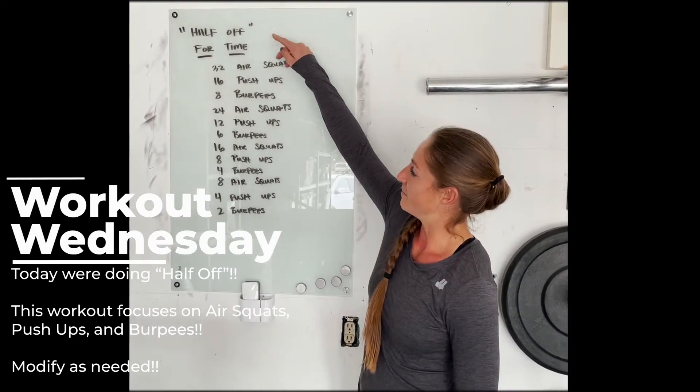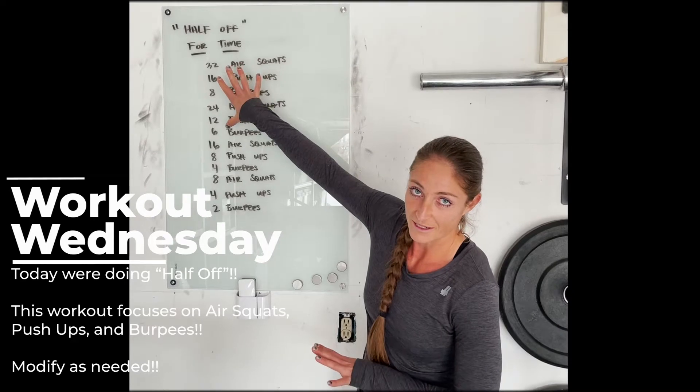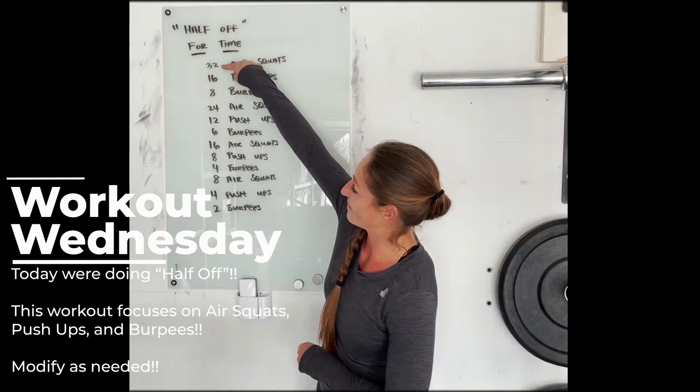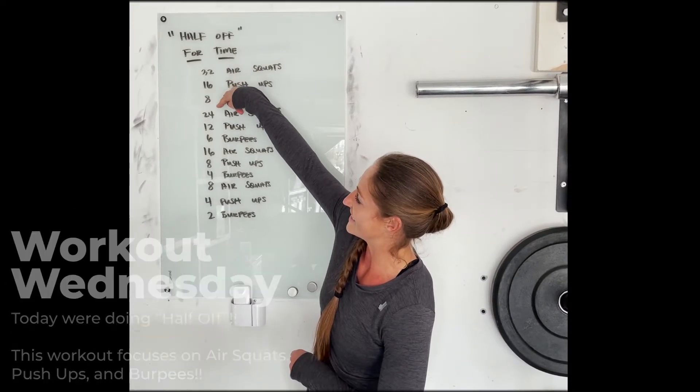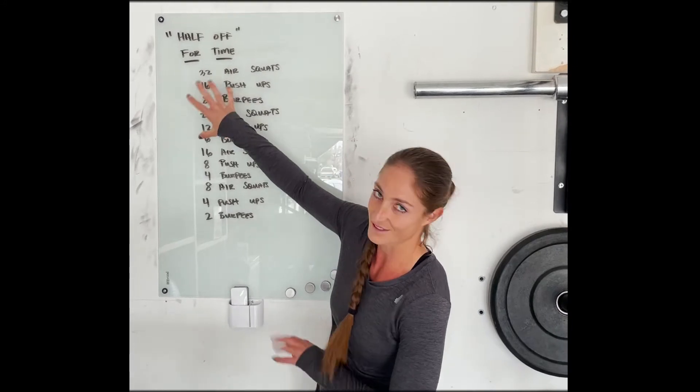You do it for time. If you didn't understand why we do the half off, you go 32, half of 32 is 16, half of 16 is 8, and then it counts again 24-12. So that's why we call it half off.